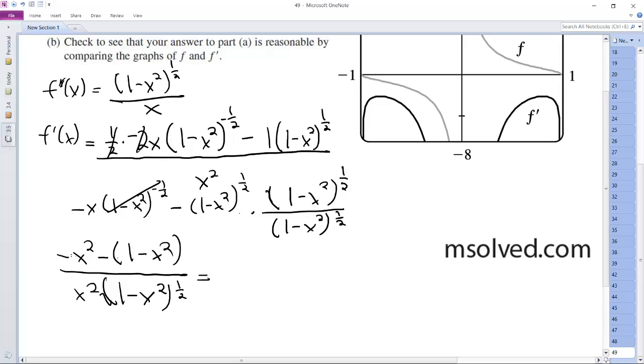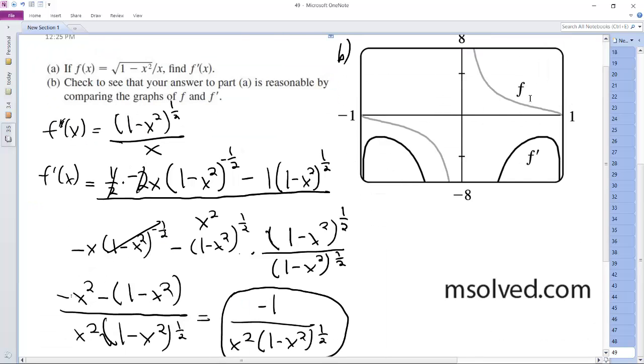So finally, negative x squared minus 1 plus x squared, these cancel out, and what I'm left with is just negative 1 over x squared, 1 minus x squared raise to the 1 half. So here's our derivative, and then there's f, and then there's f prime for the graph.